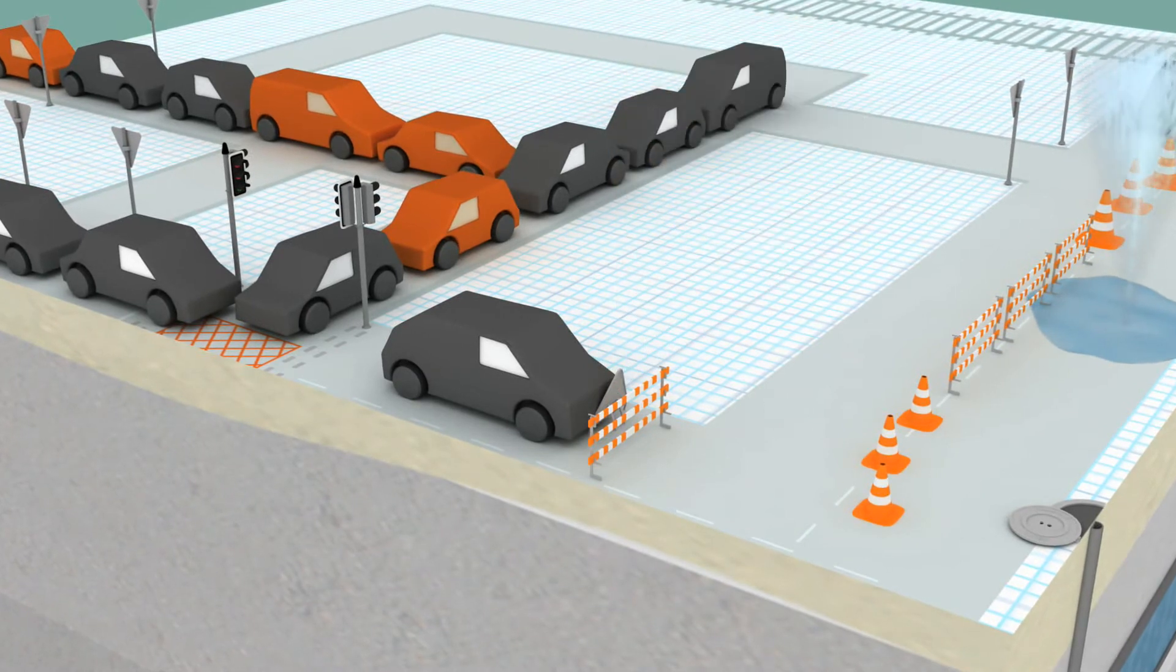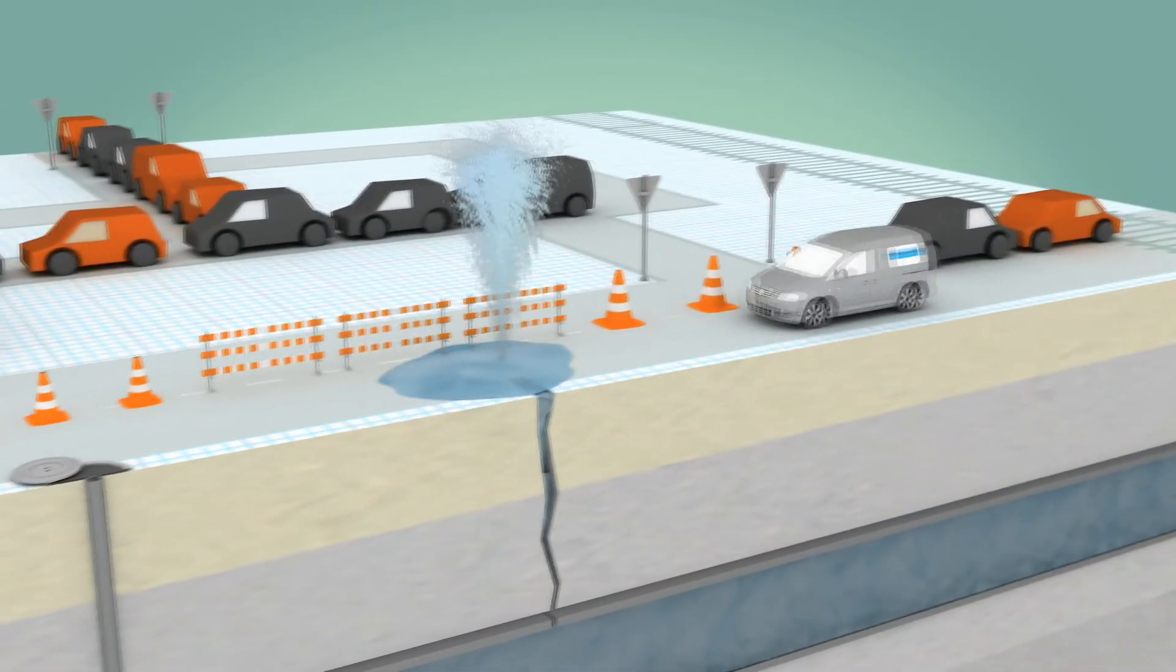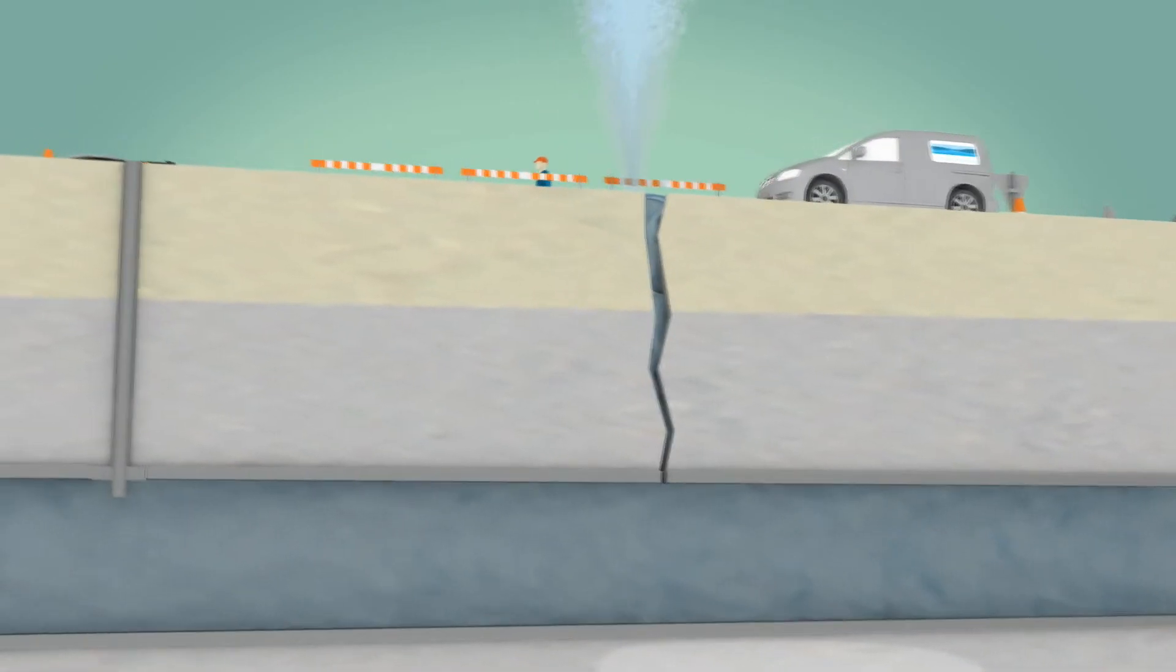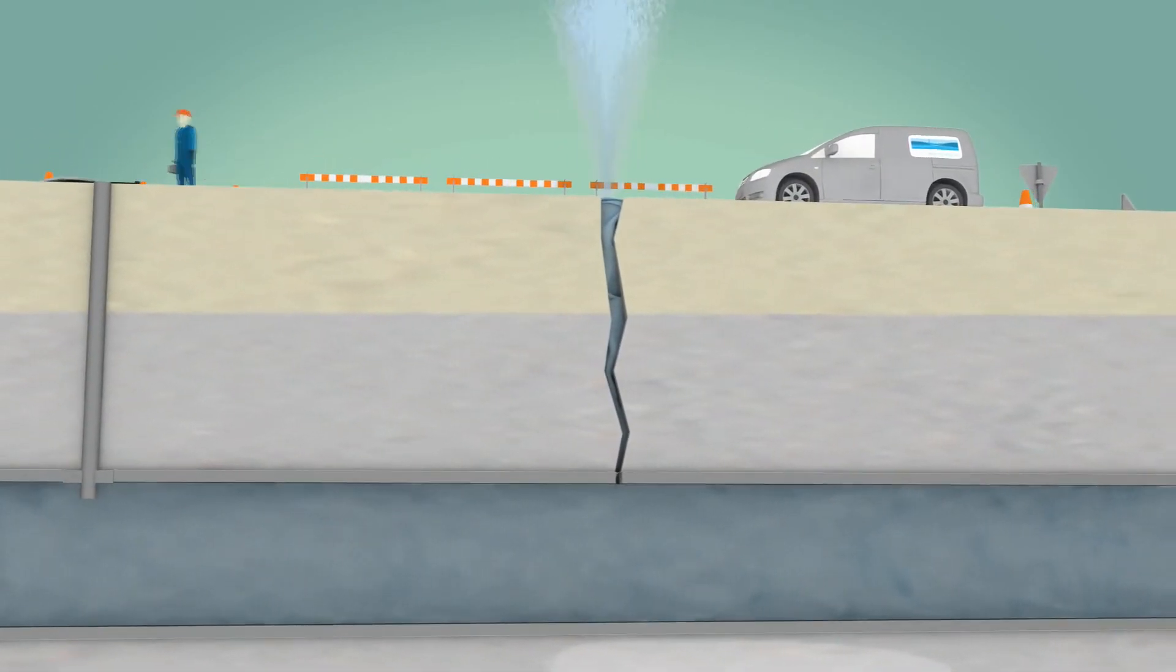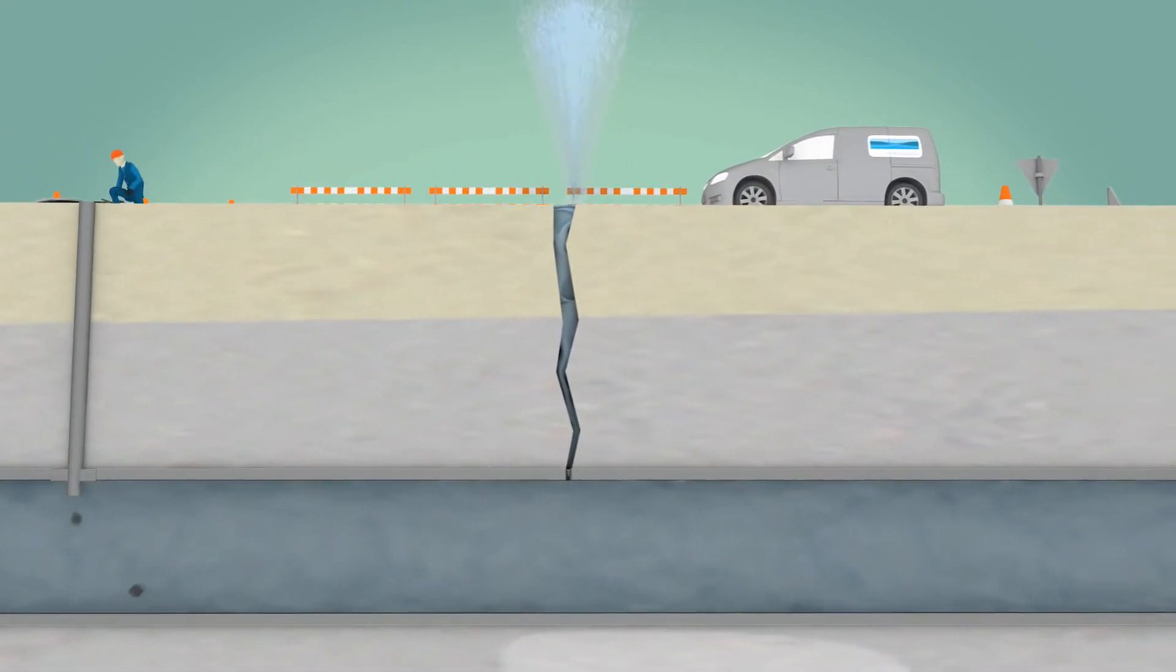The technology works by putting a platelet into a water pipe to seal a leak from the inside. Platelets travel along the pipe to find the source of the leak and plug the hole.